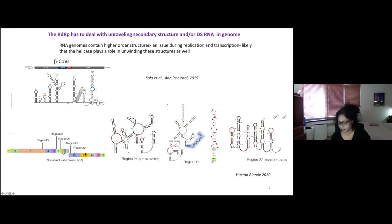So the helicase might play a role in basically unraveling this so that the polymerase can access these bases for templated transcription.